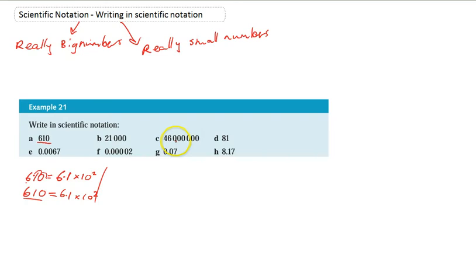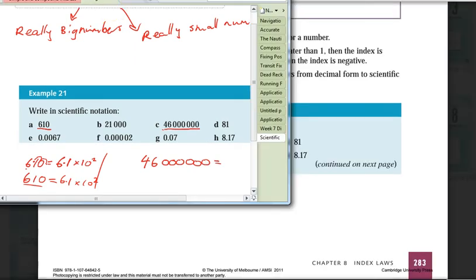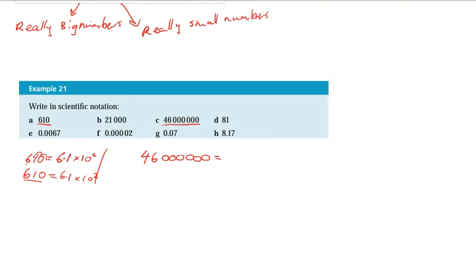Okay we might try it with a really big number here. So if we were to do 46 million that's 460000000, you can see that that's a bit of a pain to write out. So we can write it in scientific notation.